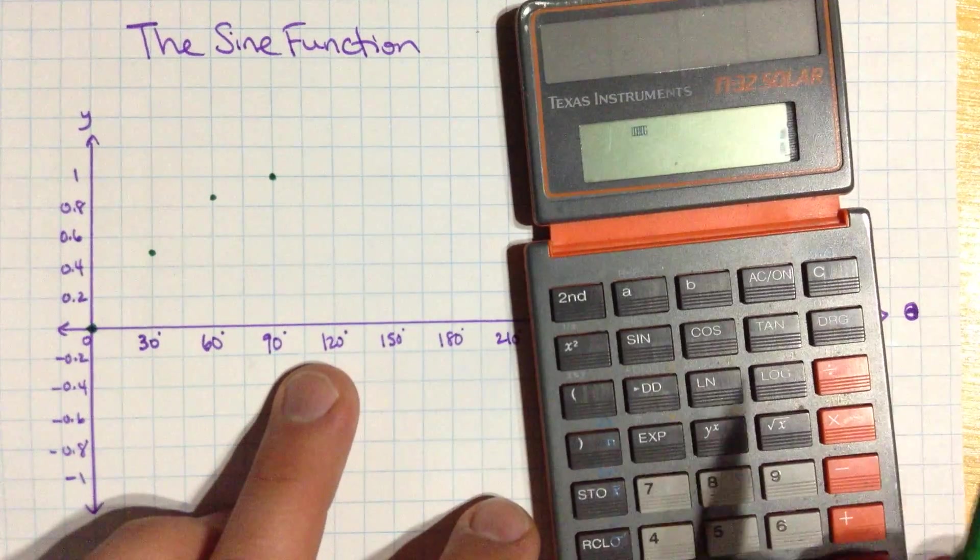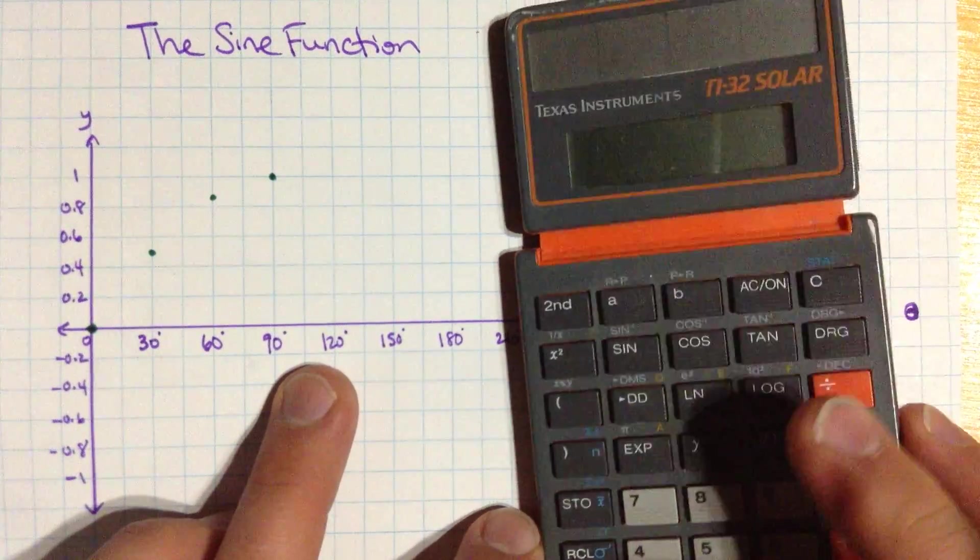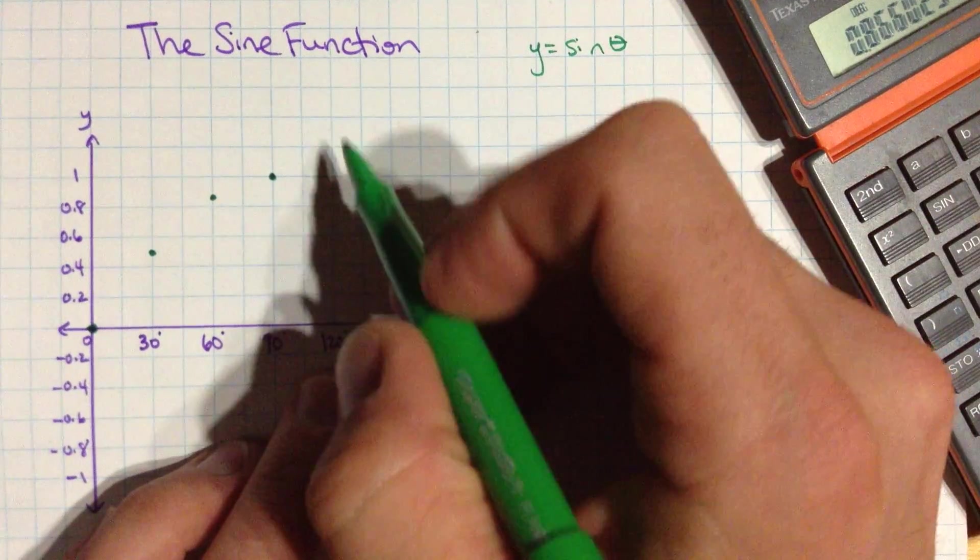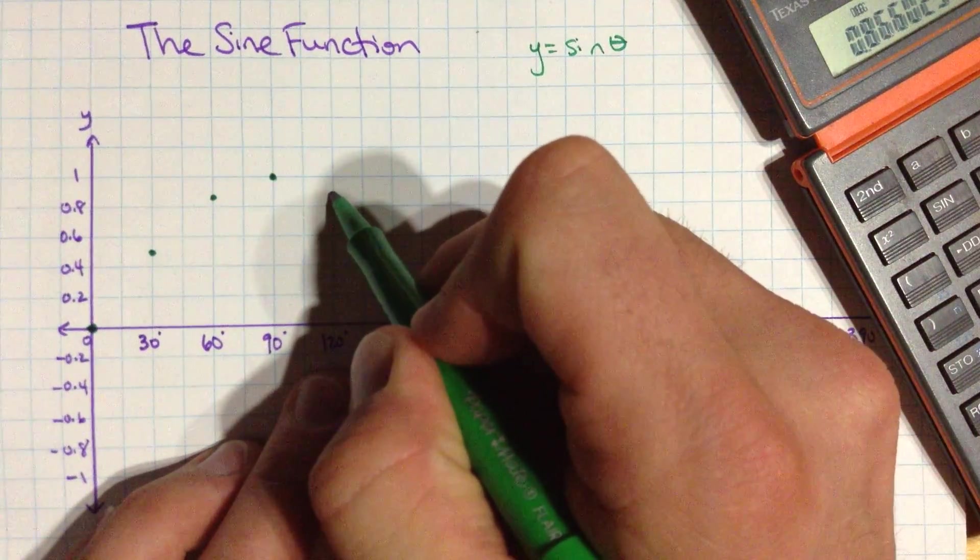And then I'm going to start coming down again, 120 sine, and oh, look, see, we get the same value again. And that's, if you remember, that's what we would expect.